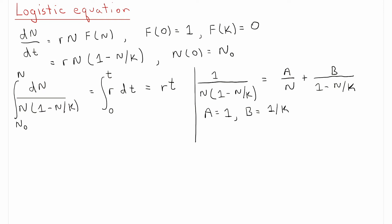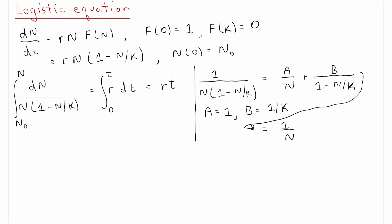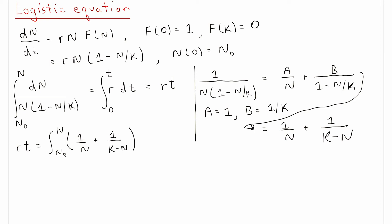And B equals 1 over K. So this partial fraction becomes 1 over n plus 1 over (K minus n). Now we can integrate, and we get r times t on the right. The left-hand side is the integral from n₀ to n of [1 over n plus 1 over (K minus n)] dn — both of which are logarithms.